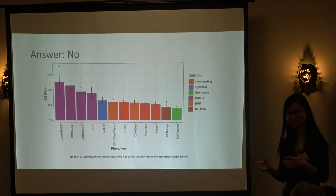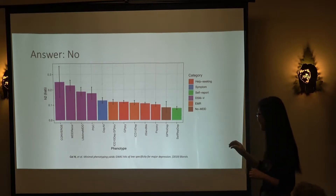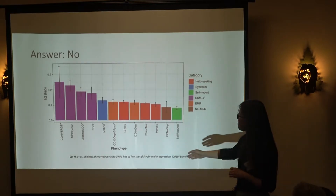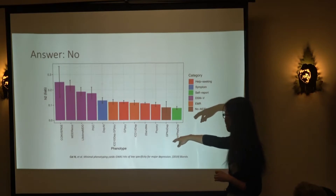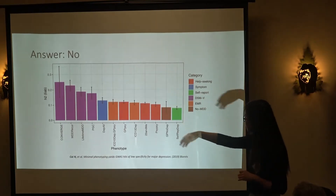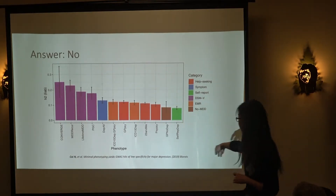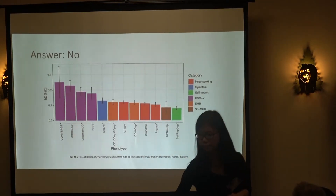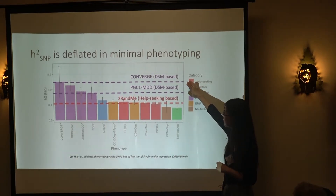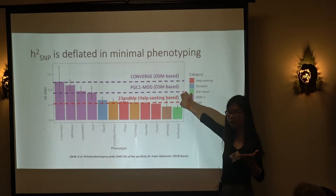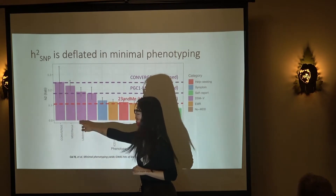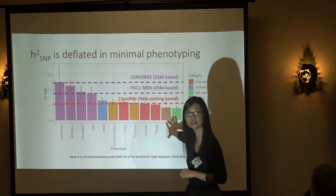Once we defined all these depression definitions, we ran GWAS on them, calculated heritability, and asked: are these the same genetically? The answer is no. Plotting heritabilities, DSM-defined depression, Converge, and PGC 2013 all have higher heritabilities than the rest. Definitions similar to Converge's severe recurrent MDD and the well-defined PGC cohorts have the highest heritabilities in UK Biobank, while 23andMe-like and help-seeking definitions are much lower.